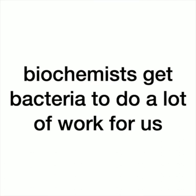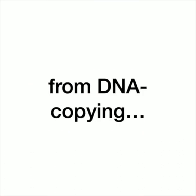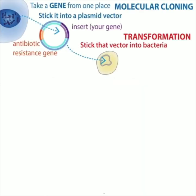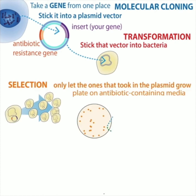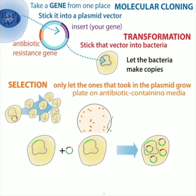In biochemistry, we use harmless bacteria to do a lot of work for us. This starts often with DNA copying. We can stick the genetic recipe for making a protein into a circular piece of DNA called a plasmid, and then we stick that plasmid into bacterial cells in a process called transformation. One of the great things about bacteria is antibiotic selection — you stick an antibiotic resistance gene into the plasmid, and if you grow bacteria in the presence of that antibiotic, only bacteria that actually have your plasmid will be able to grow and make lots of copies.